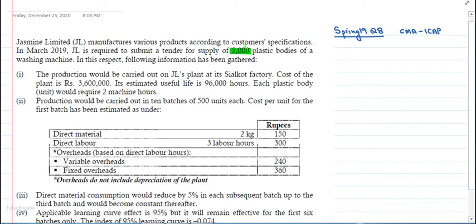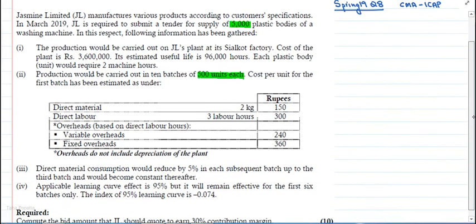In March 2019, JL is required to submit a tender for supply of 5,000 plastic bodies of a washing machine. In this respect, following information has been gathered: No. 1 - The production will be carried out on JL's plant at its Sialkot factory. Cost of the plant is Rs. 3.6 million. Its estimated useful life is 96,000 hours. Each plastic body unit will require 2 machine hours. No. 2 - Production will be carried out in 10 batches of 500 units each. Cost per unit for the first batch has been estimated as under.